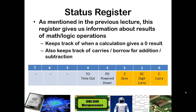As we had discussed in the last lecture, the status register is one of the most important special function registers available within the PIC architecture. The three most important bits that we're going to focus on are the carry bit, the digit carry bit, and the zero bit. I had given an example in the last lecture about when the carry bit might be set, and when the zero bit and the digit carry might be set.